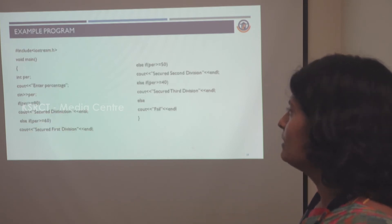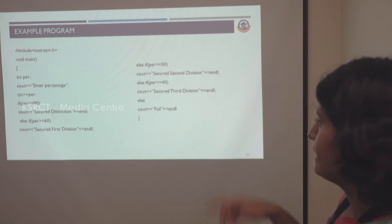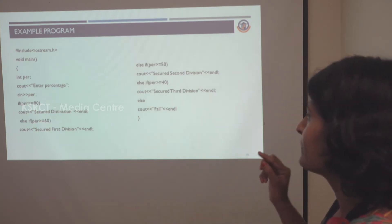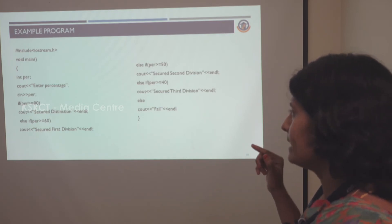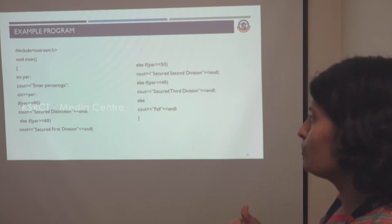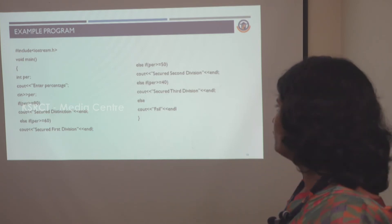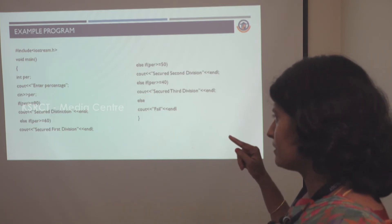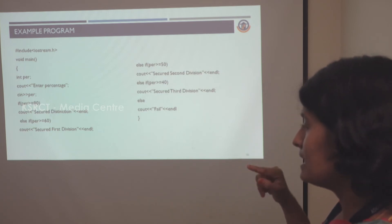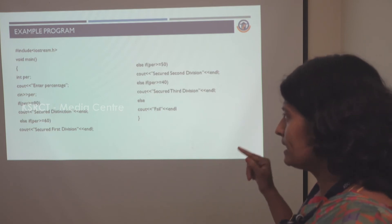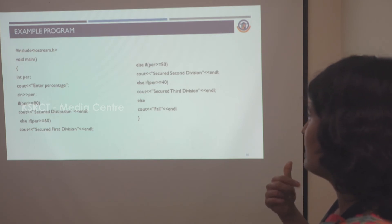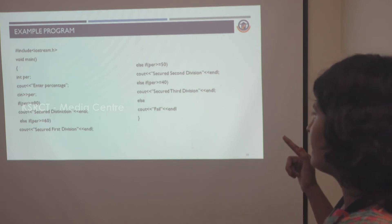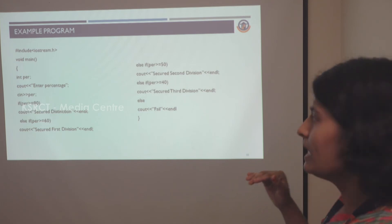Let's see the sample program for the if-else ladder. Here we are entering the percentage of a particular student. Suppose the percentage is 80 — we check the first condition: if 80 is greater than or equal to 80, the condition is true and it prints 'secured distinction.' If we give 35 as the percentage, the first condition fails, then the else-if for >= 60 fails, then the next else-if fails, then the condition >= 40 also fails because 35 is less than 40. Finally it enters the last else block and prints 'fail.'